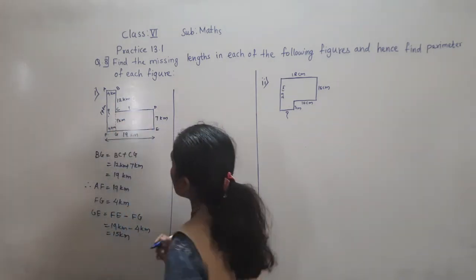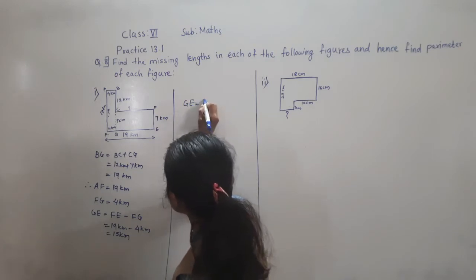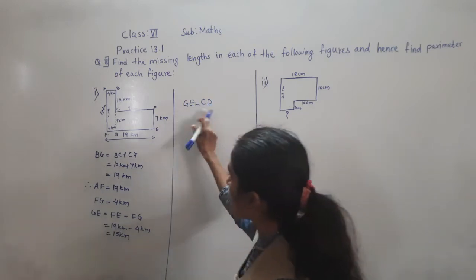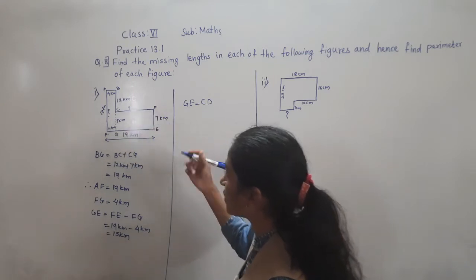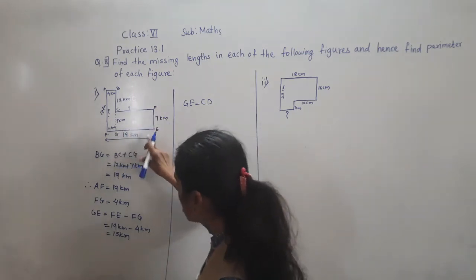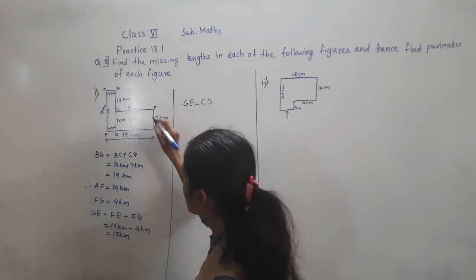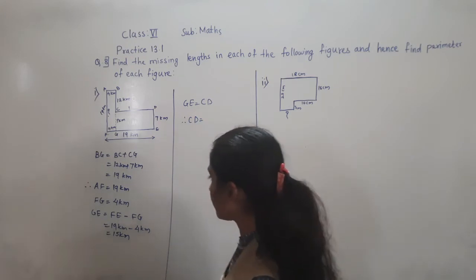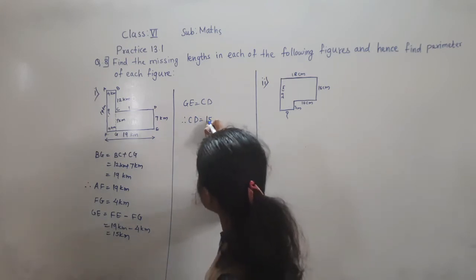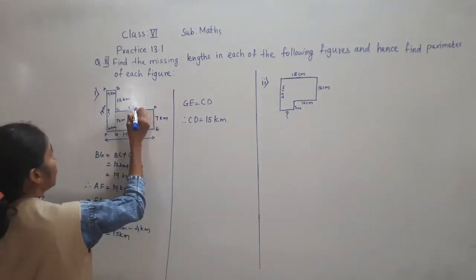Now GE and CD are equal because they are opposite sides of a rectangle, and opposite sides of rectangles are equal. GE is 15 km, therefore CD is also 15 km.